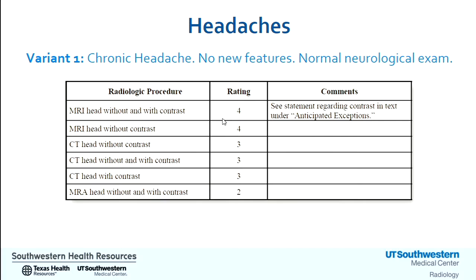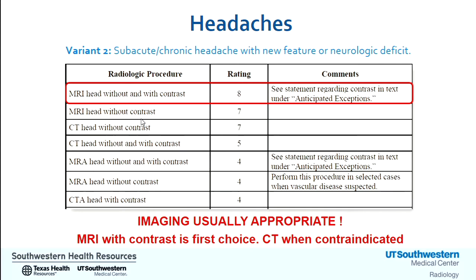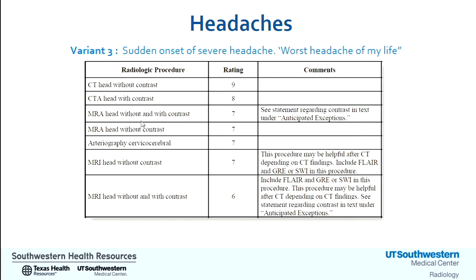Here's the common typical scenario as an example from the appropriateness criteria. For a patient with chronic headache, no new features, and a normal neurologic exam — imaging is usually not indicated. When you do feel like you need to image somebody, MRI is probably the way to go. What about patients who have chronic headaches but now have something new — some neurologic complaint? Assuming no emergent symptomatology, an MRI with and without contrast is usually the way to go, with CT if there's a contraindication.